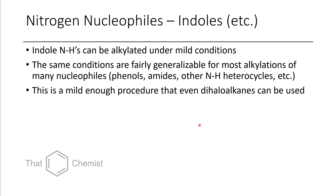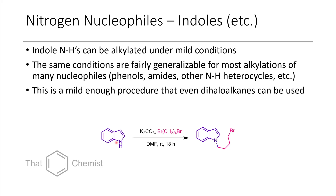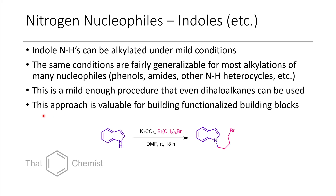The functionalization of other nitrogen heterocycles is possible using relatively mild conditions. Even though indole isn't that acidic at the NH, it's possible to use a mild base like potassium carbonate in DMF with an alkylating agent — typically an overnight reaction. You can even use dihalides for these reactions and get relatively good yields of the monofunctionalized product. These are softer nucleophiles that tend to be well behaved. For a synthetic chemist doing method development, this is a useful method for preparing functionalized building blocks — you have a heterocycle on one end and a leaving group on the other, making it a great way to develop libraries of compounds.